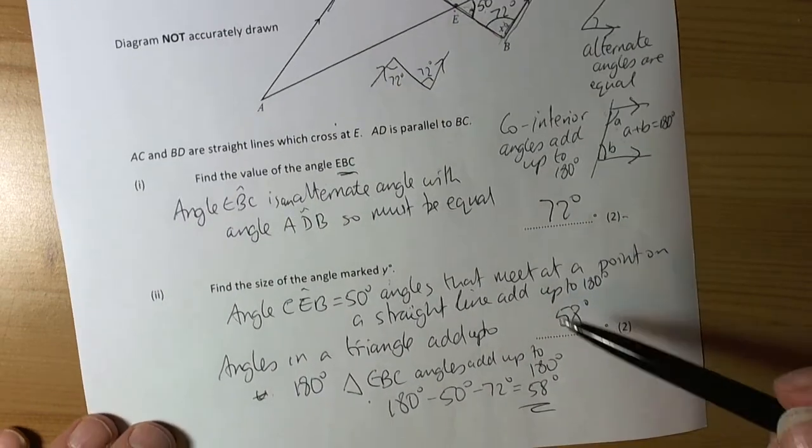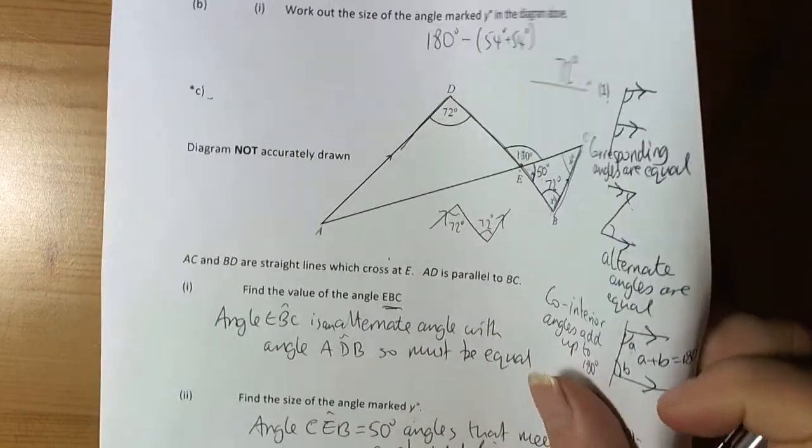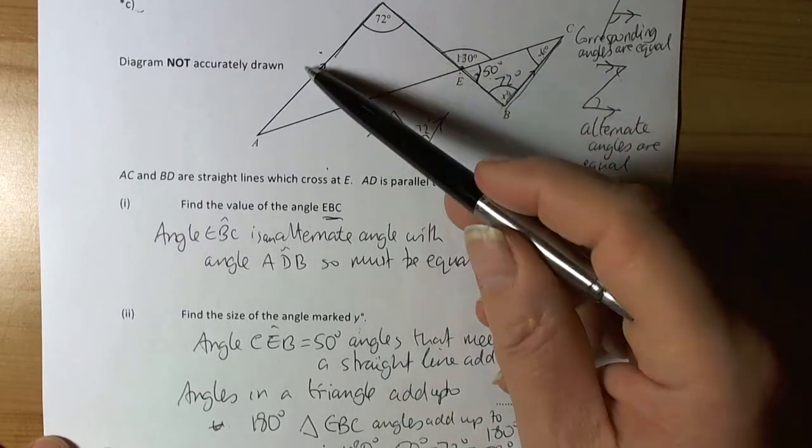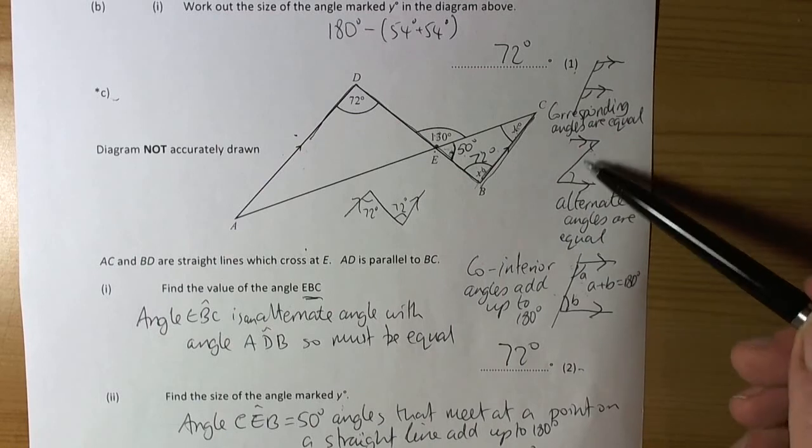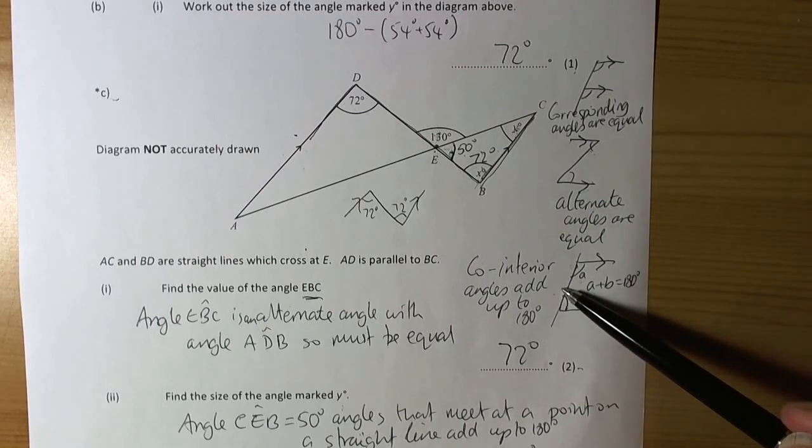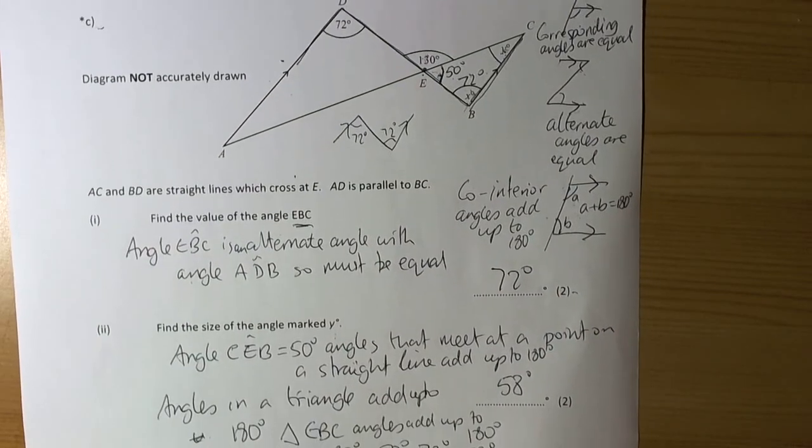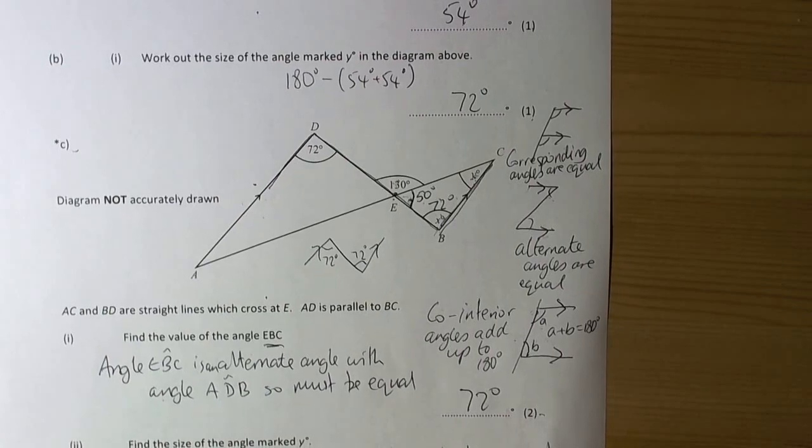So we're just justifying the answers because they're a star question. And we need to explain why we've done what we've done. And parallel lines are in the picture. So we're likely to have used one of these theories to work out the missing angle. And we need to write down what's going on. OK, so that's a run through working out missing angles in shapes. Thank you.